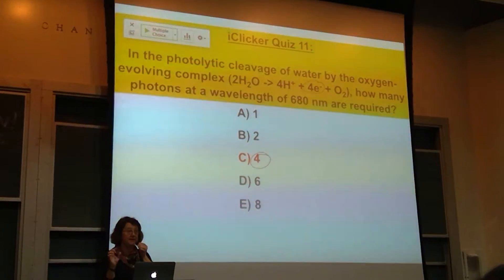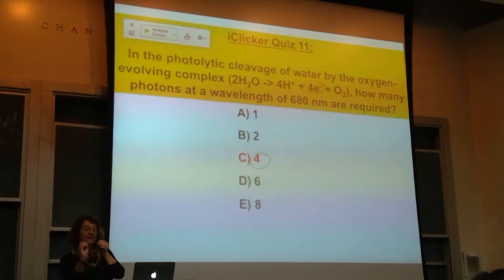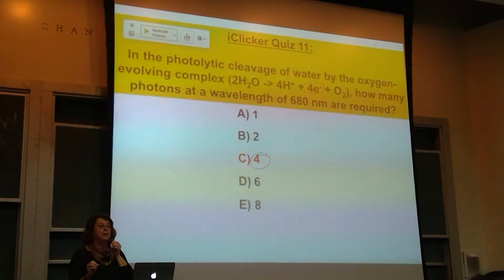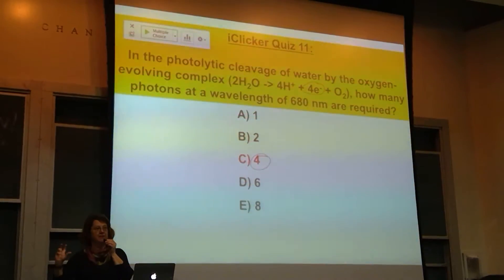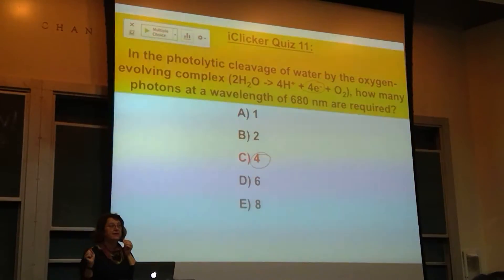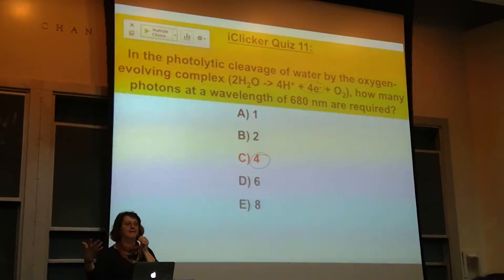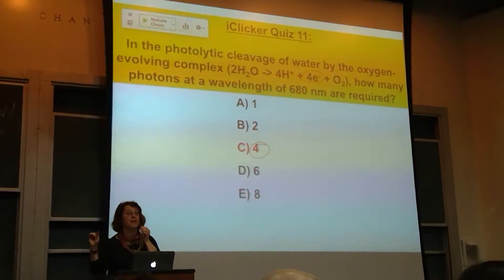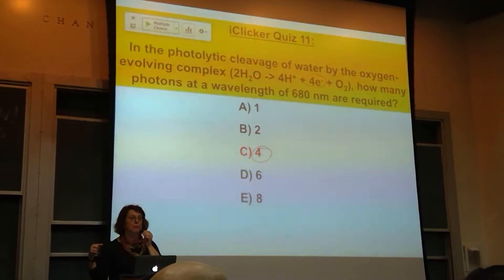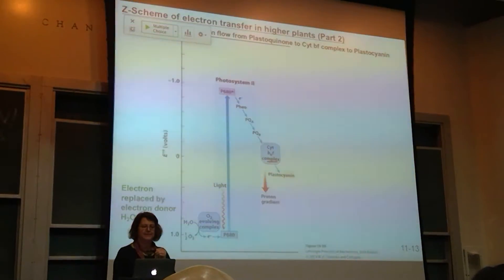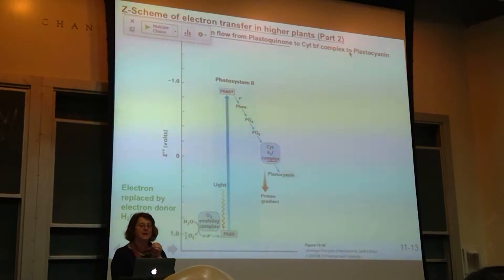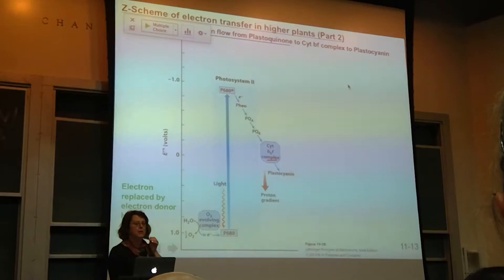If P680 is absorbing at 680 nm, that's where it's absorbing — that's why they call it P680. For bacteria and other organisms, the number is slightly different. For more technical courses, you'll often see the number given — like P720 or P640. It has evolved to absorb at 680 nm in plants, with just slight differences between organisms.